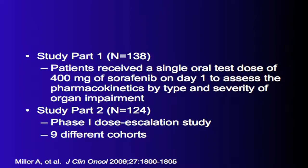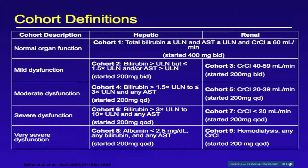The CALGB 60301 study had two parts. Part one looked at 138 patients with different tumor types, including about 30-plus patients with kidney cancer, hepatocellular patients, and others. Part two looked at 124 patients in a phase 1 dose escalation study across nine different cohorts. The cohort definitions included patients with normal bilirubin and normal renal function starting at 400 milligrams BID, with hepatic and renal cohorts stratified by mild, moderate, severe, or very severe dysfunction, and I have highlighted the starting doses for each cohort.